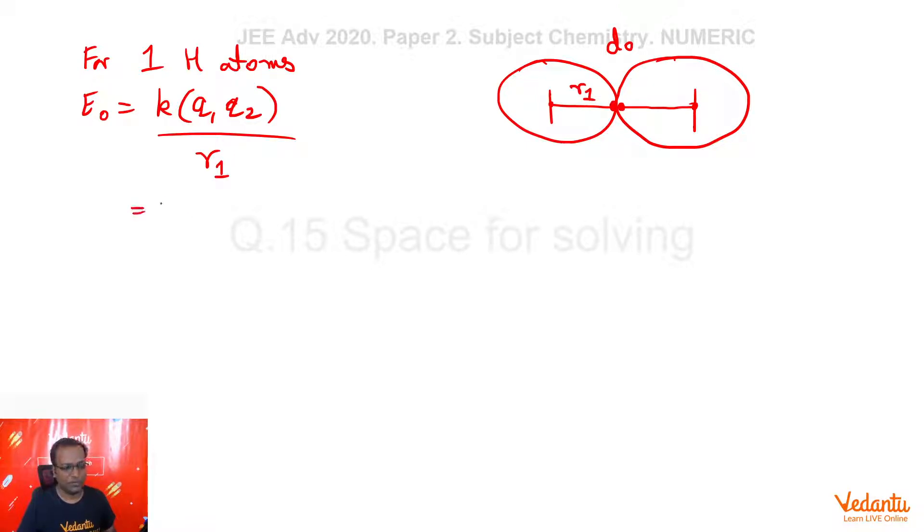So let's plug in the values. We know the value of K as 9 into 10 to the power 9. Then the value of Q, that is the electron charge, 1.6 into 10 to the power minus 19. The another Q, that is the charge of a proton. Therefore, 1.6 into 10 to the power minus 19. Upon what do we have? The Bohr radius, which we remember as 0.529 Angstrom, so 0.529 into 10 to the power minus 10.